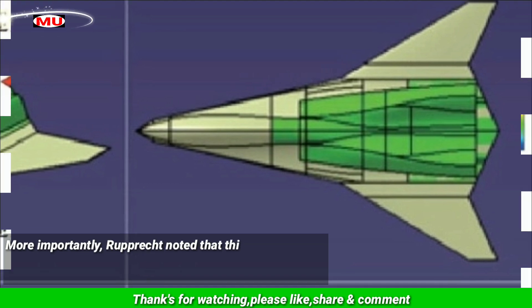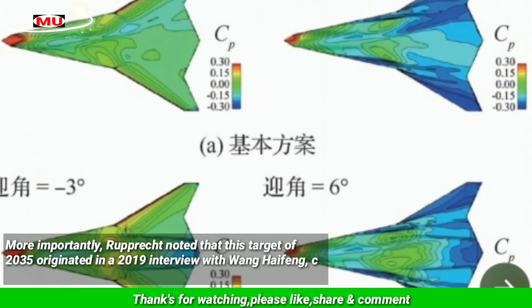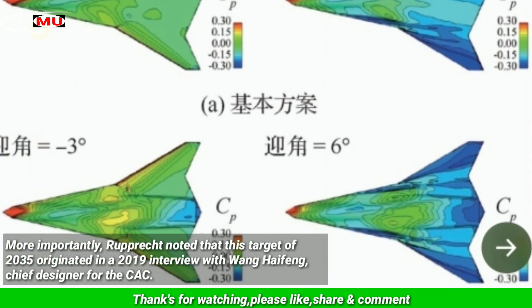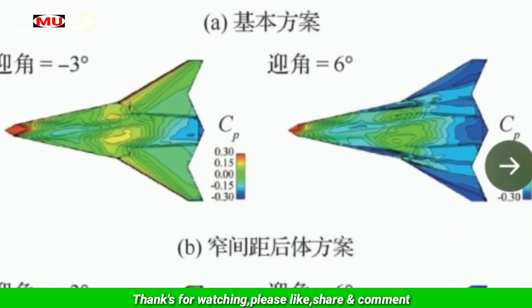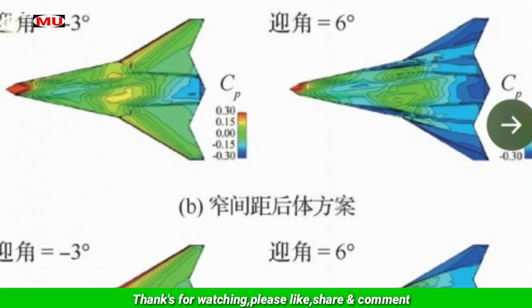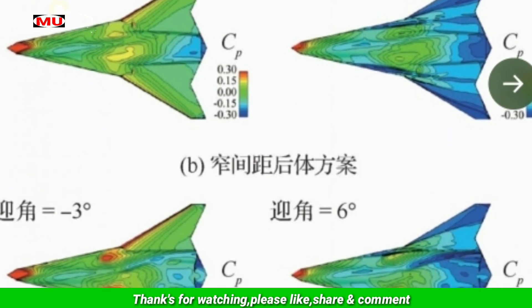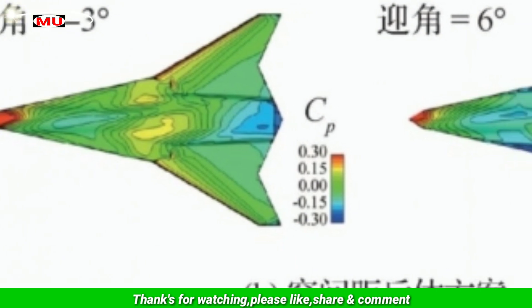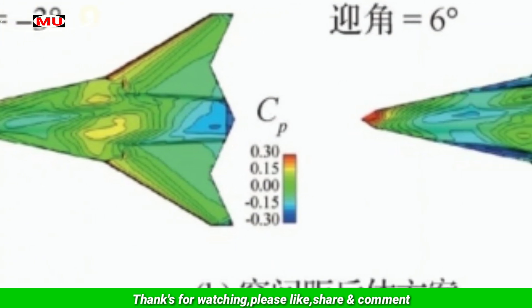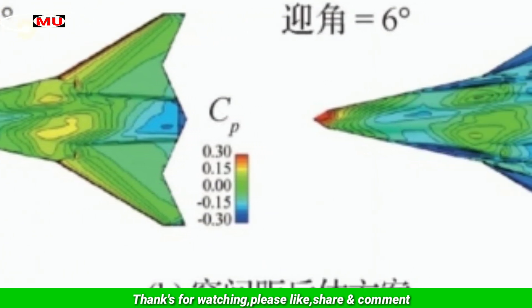Ruprik noted that this target of 2035 originated in a 2019 interview with Wang Haifeng, chief designer for the CAC. CAC is one of China's two major fighter manufacturers responsible for the single-engine J-10 fighter and the 5th-generation J-20 aircraft. Therefore, it seems like an obvious candidate for a 6th-generation fighter program.